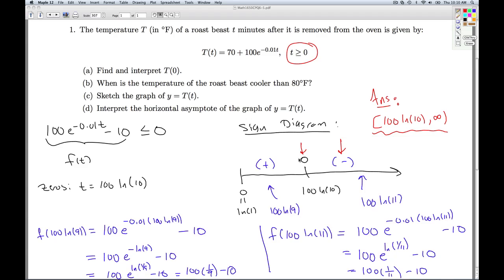So basically it's cooler than 80 degrees Fahrenheit after 230 minutes. So it's nearly two hours for this roast beast to cool down to a temperature under 80 degrees. So that'll do it then for part B.